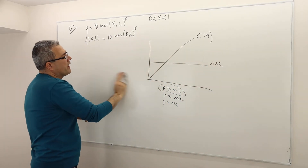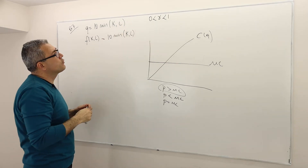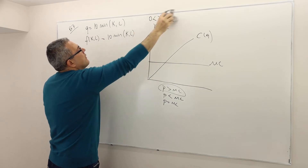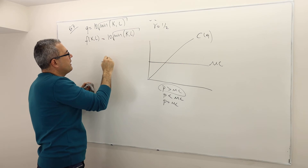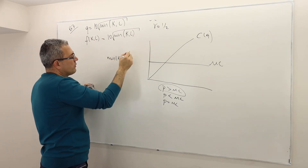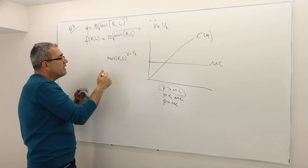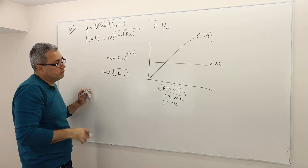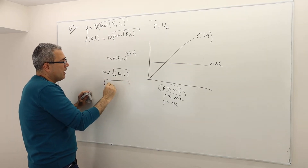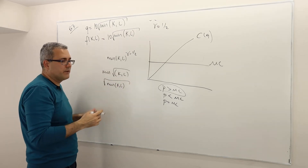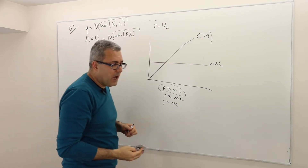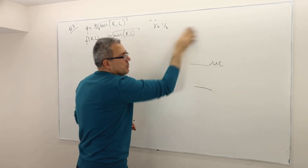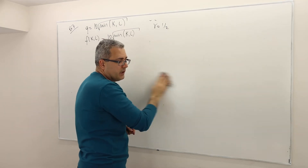Supposing gamma is equal to one half. So minimum of K,L to the gamma — or one half — means I first take the minimum of K and L and then take the square root of it; it's not taking the square root of K and L separately and then minimizing. So with gamma equal to one half, the task is to calculate the firm's total cost function and profit function, and then given specific values of R, W, and P, determine how much quantity will be produced.